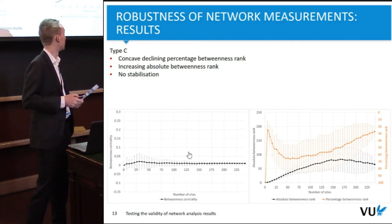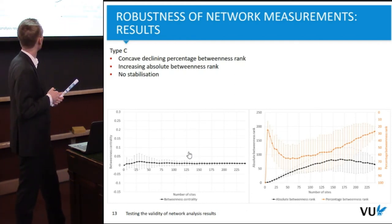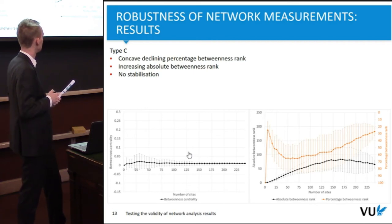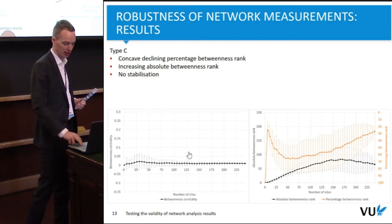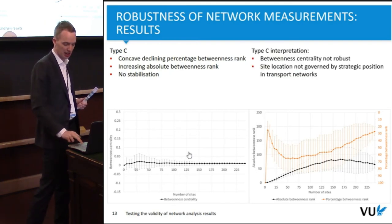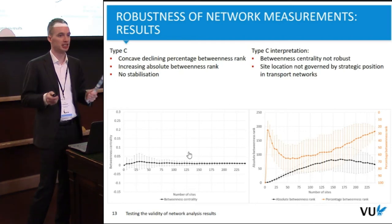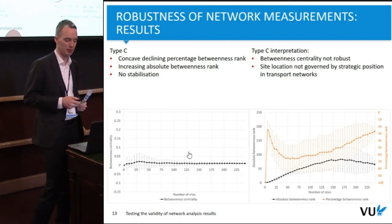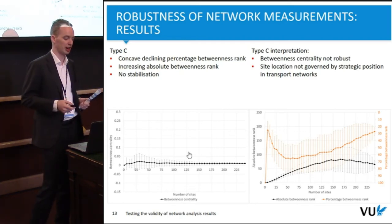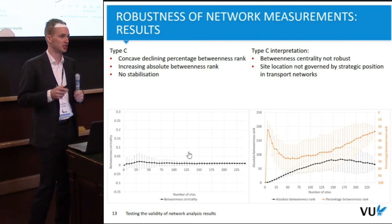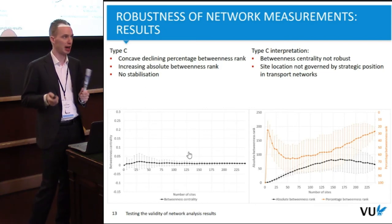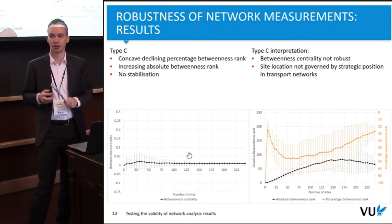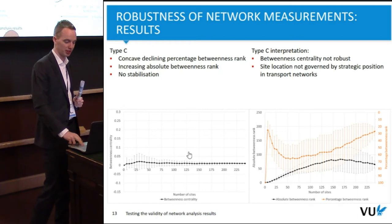Type C is very different: it has a concave declining percentage betweenness rank, an increasing absolute betweenness rank, and absolutely no stabilization of the network measures. This shows that betweenness centrality for sites belonging to this type is not robust and is very dependent on that precise network structure being present. From an archaeological point of view, the site location is probably not governed by a strategic position in transport networks.